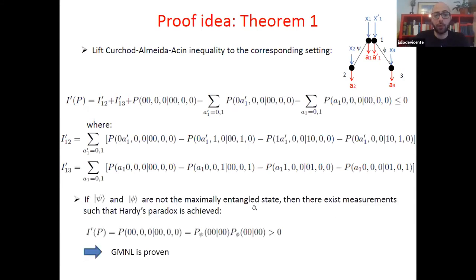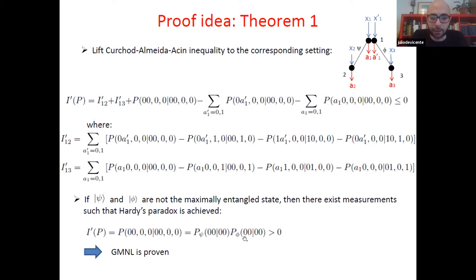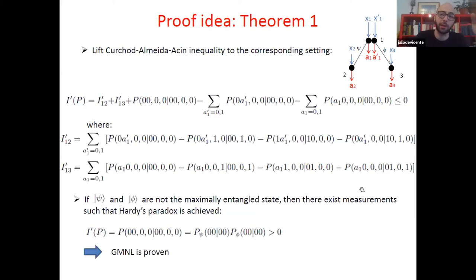The final idea in the proof is that provided ψ and φ are not maximally entangled states, there exist measurements such that the Hardy paradox is achieved. Many cancellations happen because certain elements of the conditional probability distribution are zero, engineered so that for the inequality only the all-inputs-zero, all-outputs-zero term survives — which is the product of the Hardy paradox terms for ψ and φ. Since Hardy's paradox makes these strictly positive, the inequality value is strictly positive and GMNL is proven.